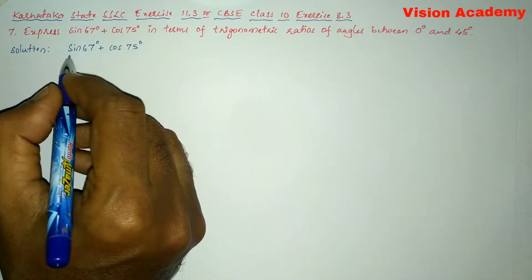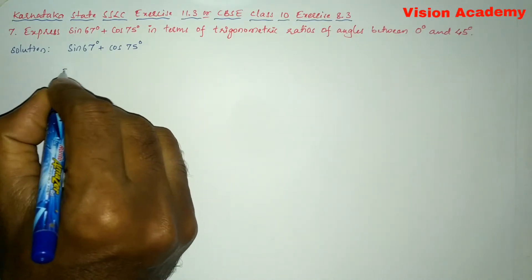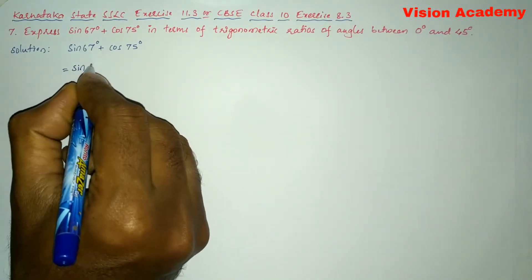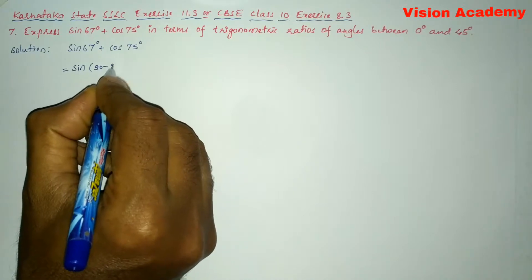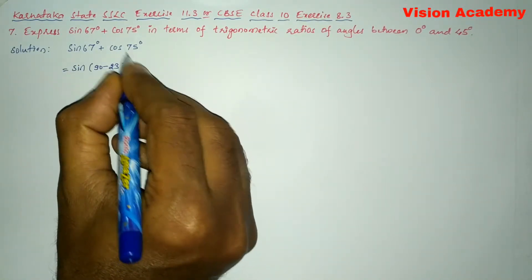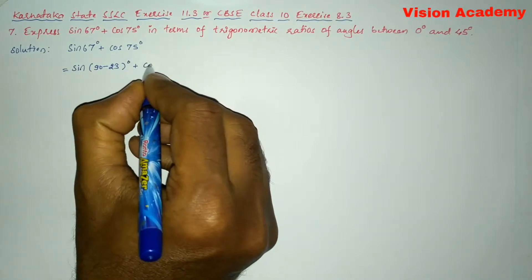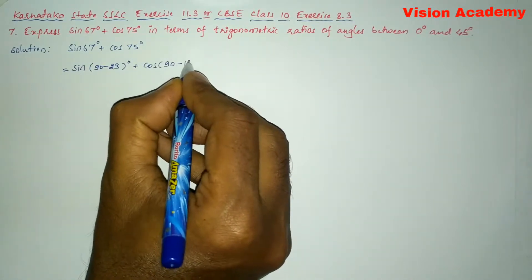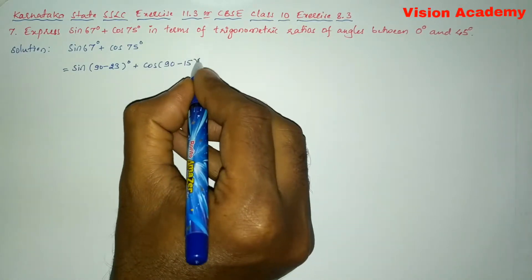So here this sin 67 degree can also be written as sin of 90 minus 23 gives us 67 degree plus cos 75 can also be written as cos 90 minus 15 gives us 75 degree.